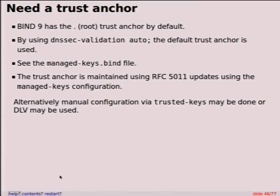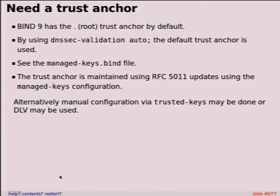You could also use an alternative called DLV — DNSSEC Lookaside Validation. You might use it in real production in your offices or with customers. What it does is provides a way to look someplace else when your parents don't have the information — they serve a record called a DLV record, which is just like the DS record. ISC does provide a DLV service. It's a good way for you to start testing — if you want to just use DLV before you can convince your parents to get your DS record in place, you can just use DLV.